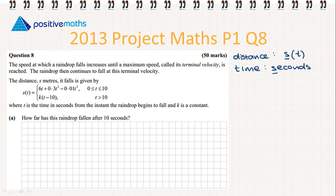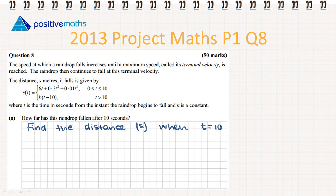Part a: How far has this raindrop fallen after 10 seconds? What they really want us to find here is the distance s when t = 10. So the first thing we are going to write is our formula for distance: s = 6t + 0.3t² − 0.01t³. We are looking for s when t = 10, so everywhere we have t we are substituting in 10.